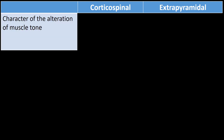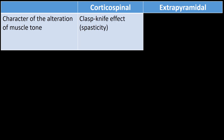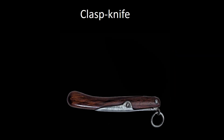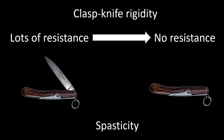We will start by considering the character of alteration of muscle tone. In patients with corticospinal tract pathology, we find spasticity manifested by the clasp knife effect. This is a clasp knife — they are hard to push down, but once you apply enough pressure, the blade quickly goes down. This type of resistance to passive movement of a patient's limbs is what we refer to as spasticity.